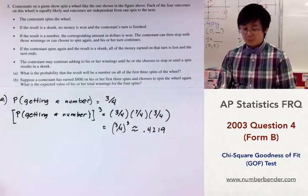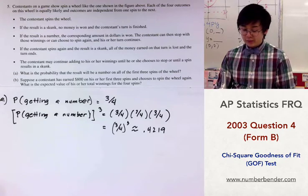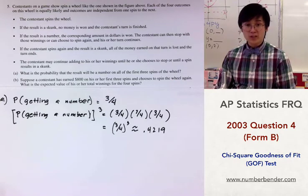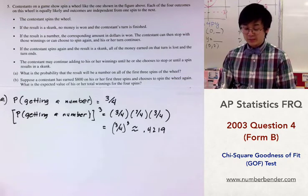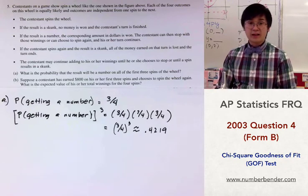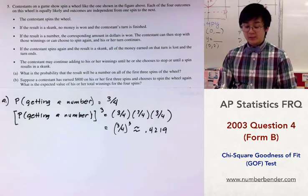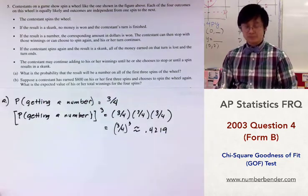For problem part B, suppose the contestant has already earned $800. We want to find the expected winning if he or she takes a fourth spin. Let's construct a probability model to compute the expected value for this condition.